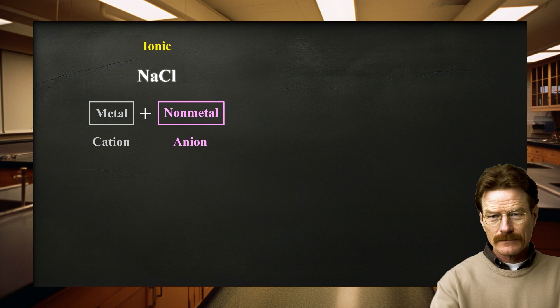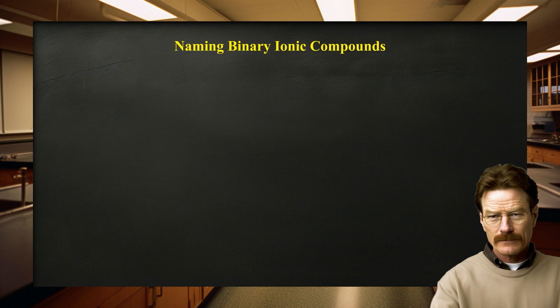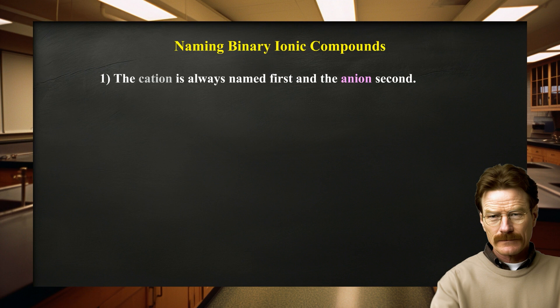The name of an ionic compound consists of two words. The first word names the cation and the second names the anion — the same order in which the ions appear in the formula. In naming binary ionic compounds, the cation is always named first and the anion second.